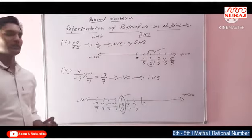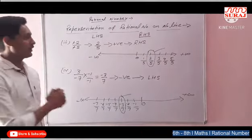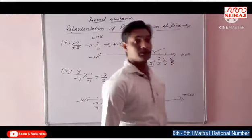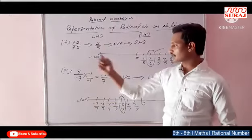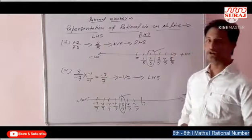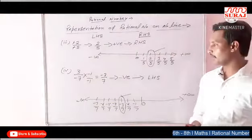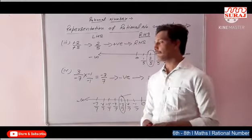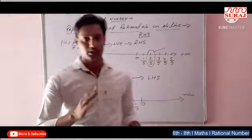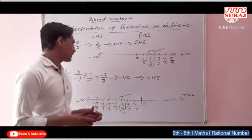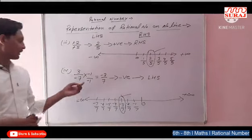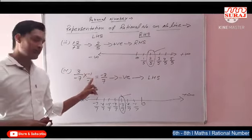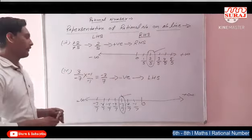Representation of rational numbers on the number line — if denominator is negative, we make the denominator positive by multiplying the given number by minus 1 upon minus 1.